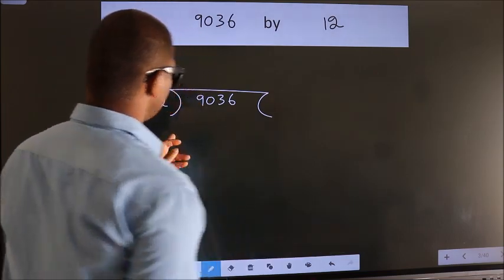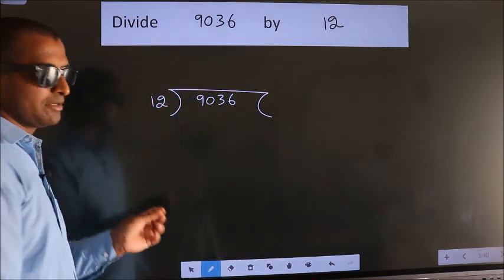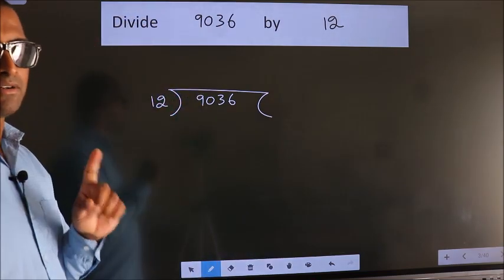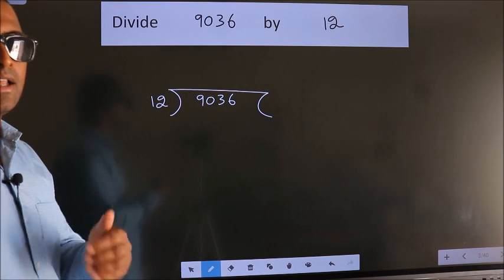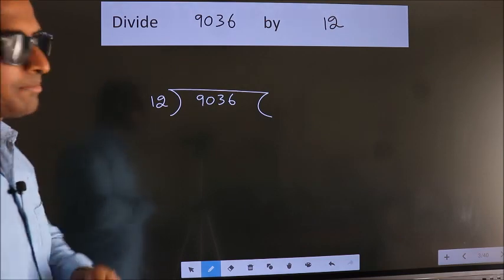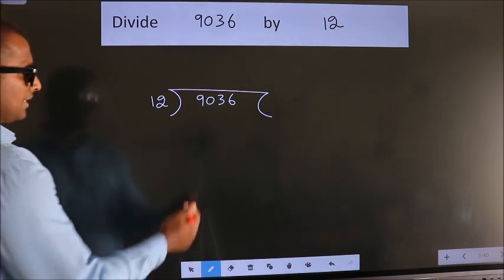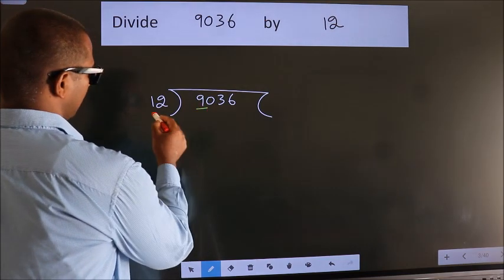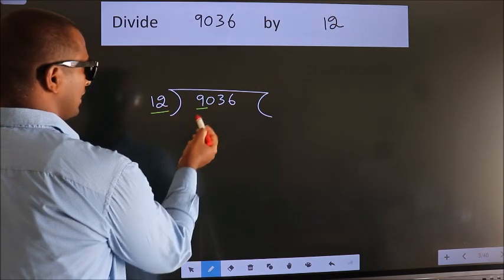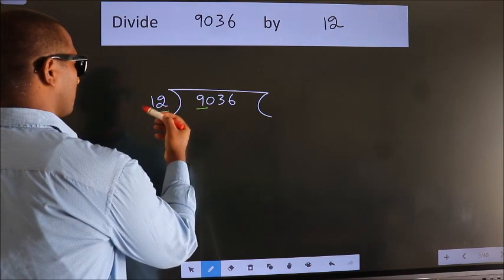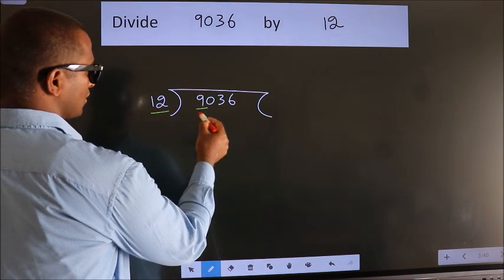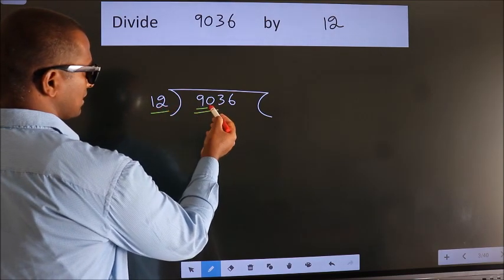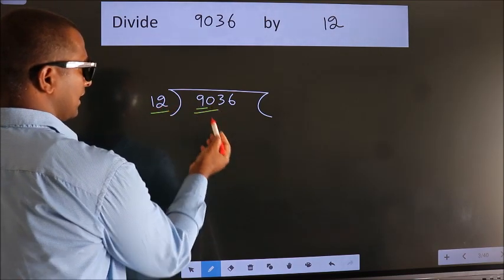This is your step 1. Next, here we have 9, here 12. 9 is smaller than 12, so we should take two numbers: 90.